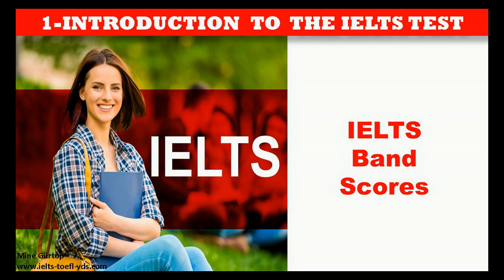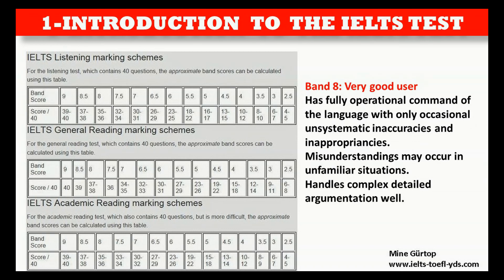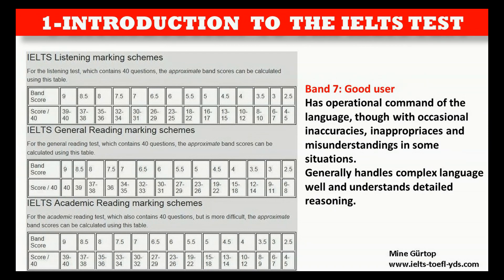Band 9 — Expert User: Has fully operational command of the language; appropriate, accurate, and fluent with complete understanding. Band 8 — Very Good User: Has fully operational command of the language, with only occasional unsystematic inaccuracies and inappropriacies; misunderstandings may occur in unfamiliar situations; handles complex detailed argumentation well. Band 7 — Good User: Has operational command of the language, though with occasional inaccuracies, inappropriacies, and misunderstandings in some situations; generally handles complex language well and understands detailed reasoning.